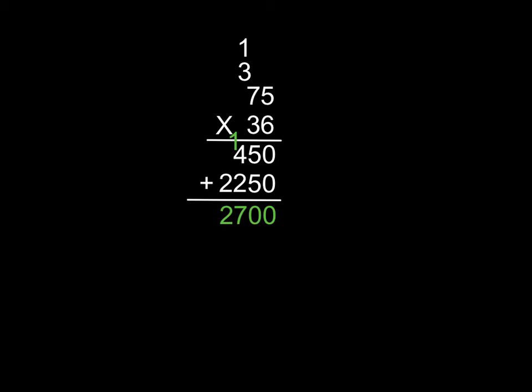But it still gets to us the same answer as we did before, meaning 75 times 36 is 2,700. That's all there is to it.